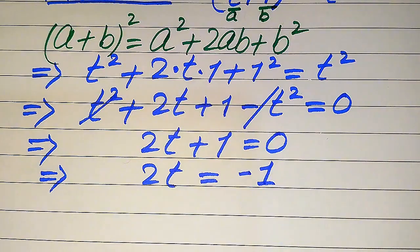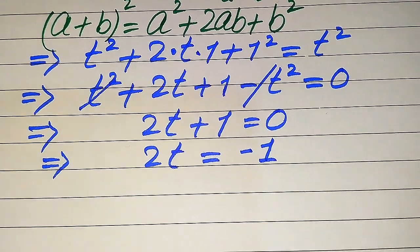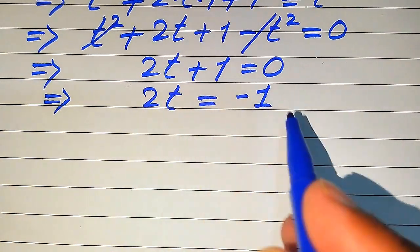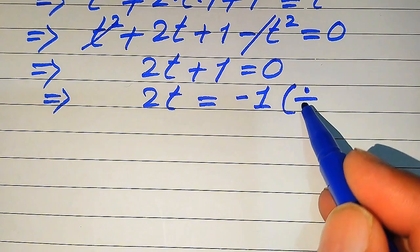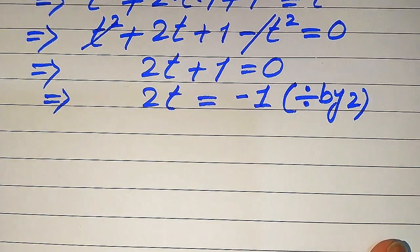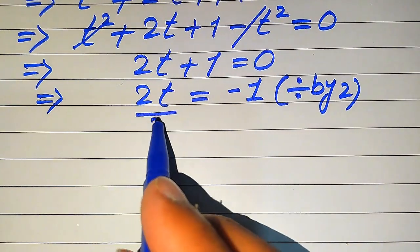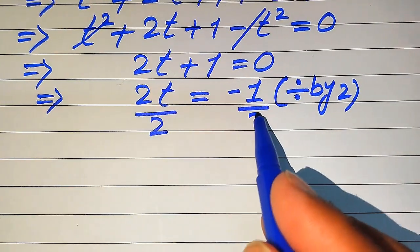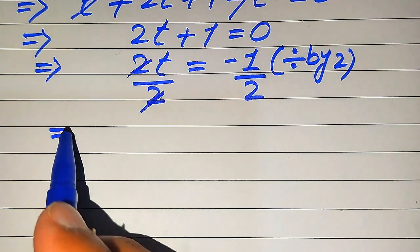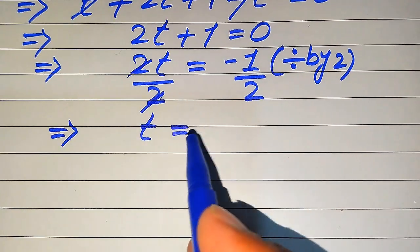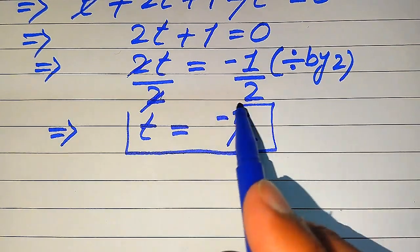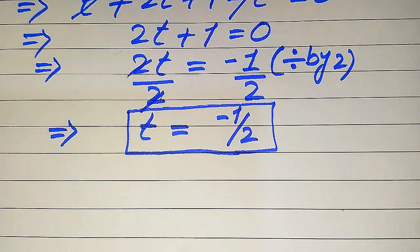To find the value of t, we remove the coefficient by dividing both sides by 2. So 2t/2 = −1/2. The 2s cancel out and we get t = −1/2. This is the value of t we obtain from this method.